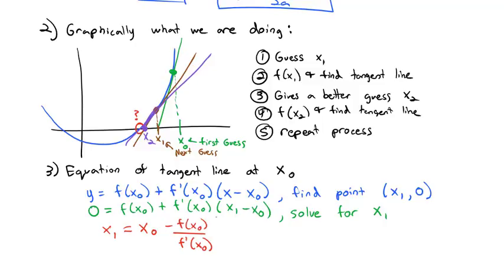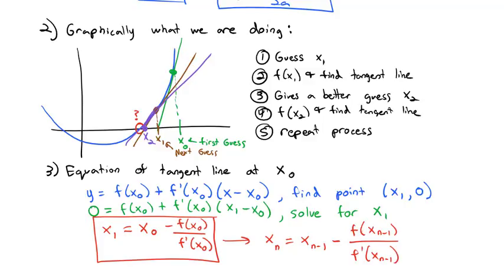All that to say, this formula tells us how to find the next point. Or maybe we can say it more generally: x sub n is equal to the previous guess, x sub n minus 1, minus f of the point x sub n minus 1 divided by the derivative x sub n minus 1. This is going to be the important equation we're going to use to make it all work.